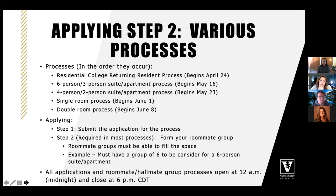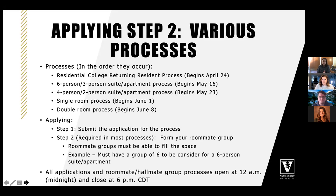Every process has a brief application that makes you eligible to form your roommate group. You need a roommate group that can fill that space — for example, a six-person suite requires a group of six. We do not do random assignments for upper division students, but we can assist with finding roommates via the roommate assistance form in the housing portal. Every application opens at 12am midnight and closes at 6pm central time on the closing day, with typically three-day periods given.